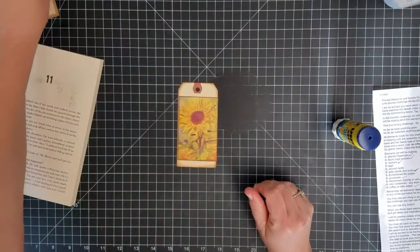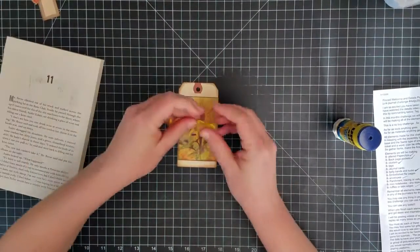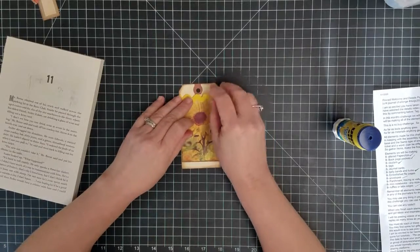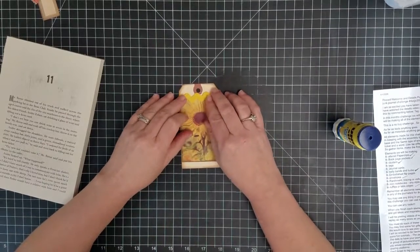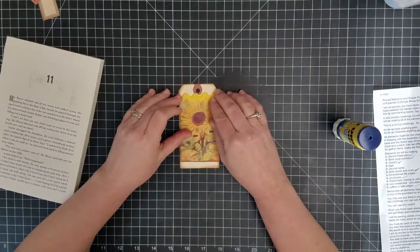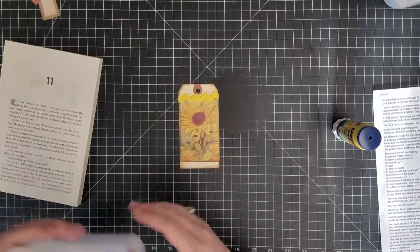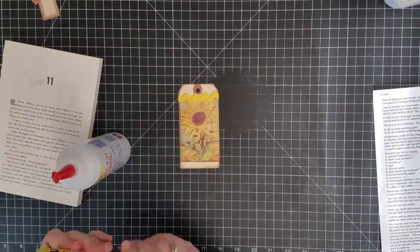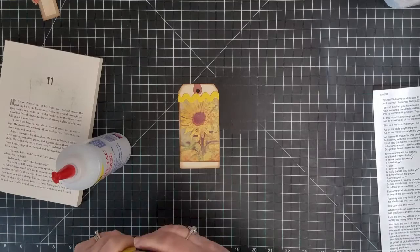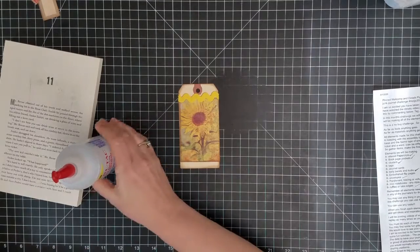I've got my image on there, and then I've got the yellow rickrack that I'm going to be putting at the top. And for that, I'm going to use a little bit of Fabri-Tac.